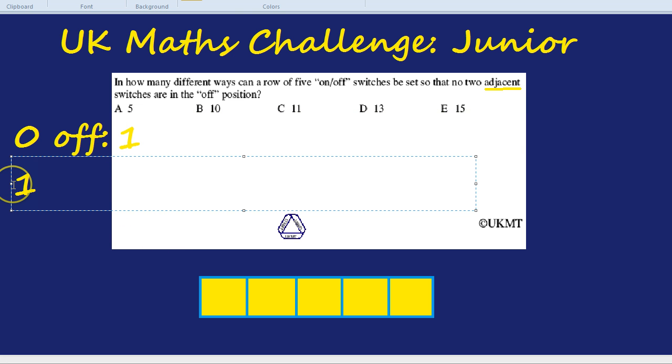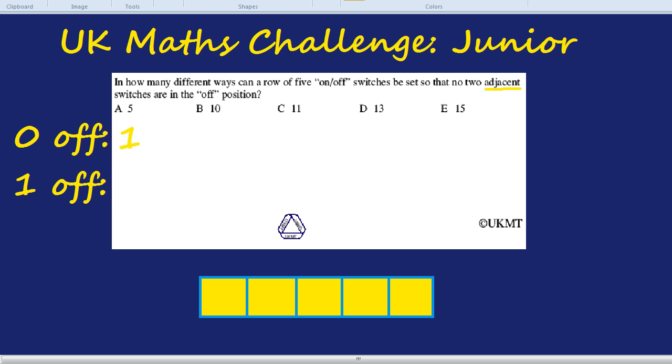How about with one light switch being off? Notice how I'm systematically going to go from zero being off, one being off, two being off, three being off, etc., so I can make sure I've got every single one. Not only that, I'm going to count up there being one off switch systematically. So let's start with the first one being off. That combination works because there aren't any two adjacent switches being off. There's one, two for the second switch being off, three if there's just the third switch being off, four and five. So there's five different combinations where there's only one off switch. Let's add that on.